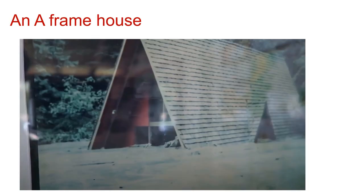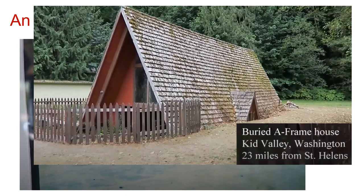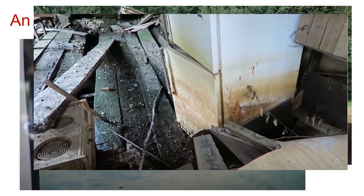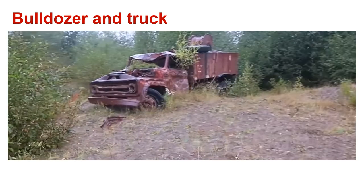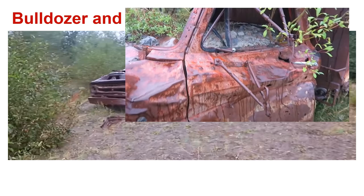An A-frame house was found. Take a look at this picture taken shortly after the eruption — you can see how high the mud flow is. Many years later, someone put a fence up because people like to go see what's around. This A-frame house was in Kidd Valley, Washington, over 23 miles from Mount St. Helens. Here's what it looked like inside the house — if you look at the refrigerator, you can see how high the mud came. Here's a bulldozer found after the eruption — all the mud and dirt, and you can see the green regenerating itself. Here's a truck that was found; you can see how high the mud flow came, with still debris inside and green growing all around it.